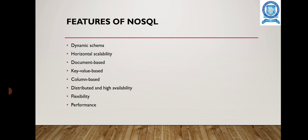The next feature is column-based. Some NoSQL databases such as Cassandra use the column-based data model where data is organized into columns instead of rows. Next is distributed and high availability — NoSQL databases are often designed to be highly available and to automatically handle node failures and data replication across multiple nodes in a database cluster. The next feature is flexibility, which allows developers to store and retrieve data in a flexible and dynamic manner.